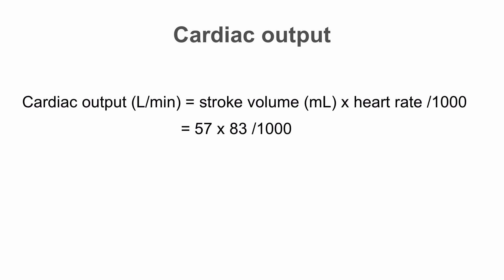So we know our stroke volume was 57. In our patient we've been looking at, they had a heart rate of 83. And that's going to give us a cardiac output of 4.7 liters per minute. So that's a really useful measurement.